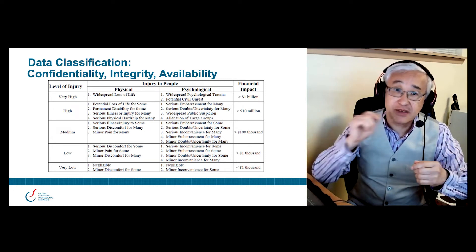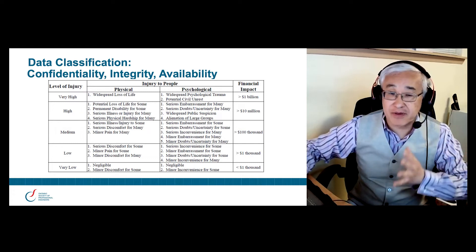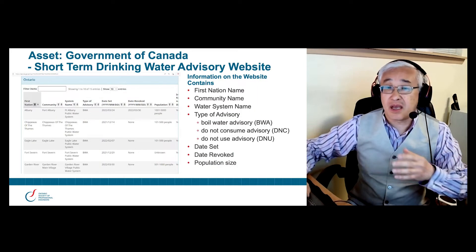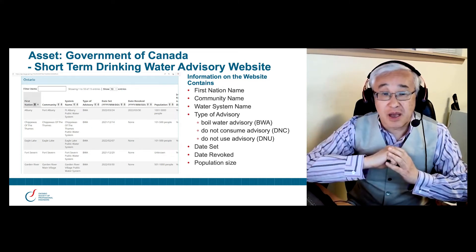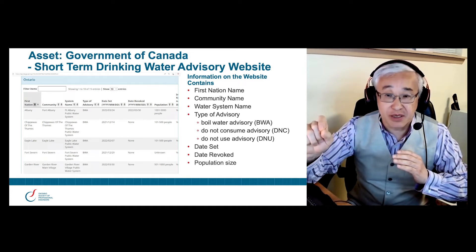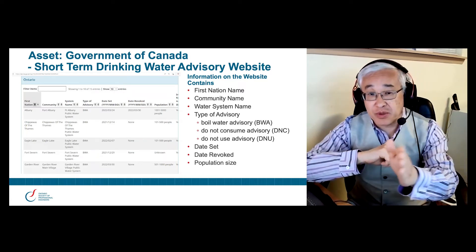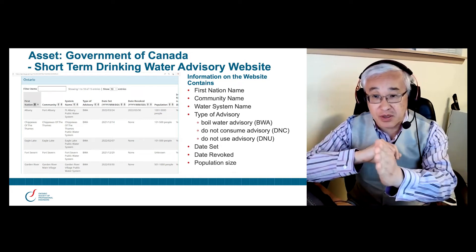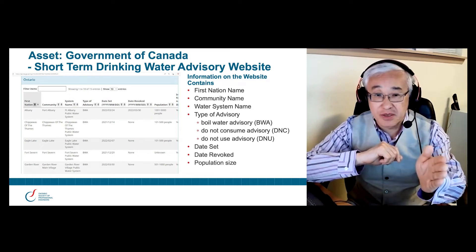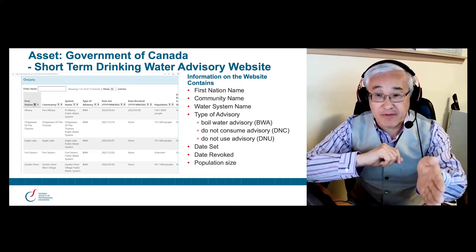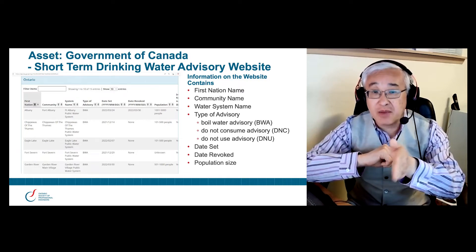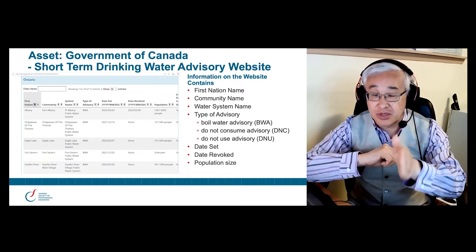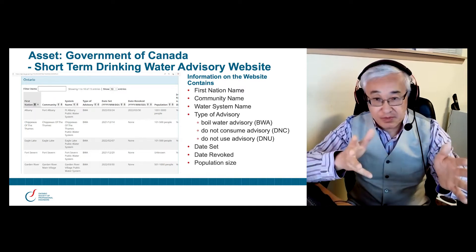That being said, let's take an example. An example of an informational asset is our next slide, which comes from the Government of Canada's website. This is about short-term drinking water advisories in Aboriginal communities. Within each column you can see: the first column is First Nation community — the name of that First Nation. The second is the community in which that First Nation resides. The third column is the water system that supplies water to that particular community.